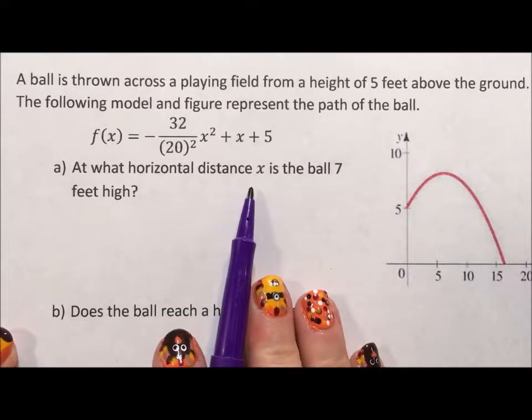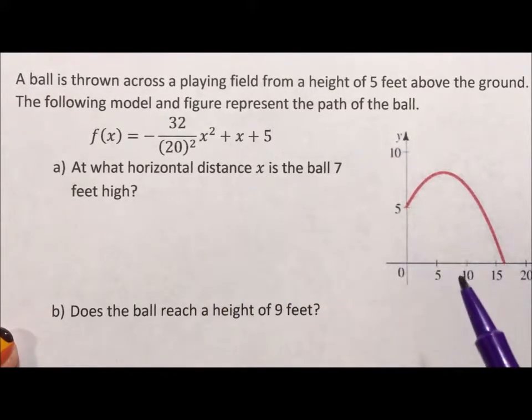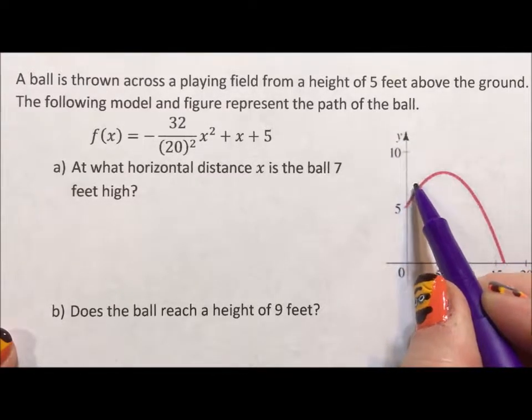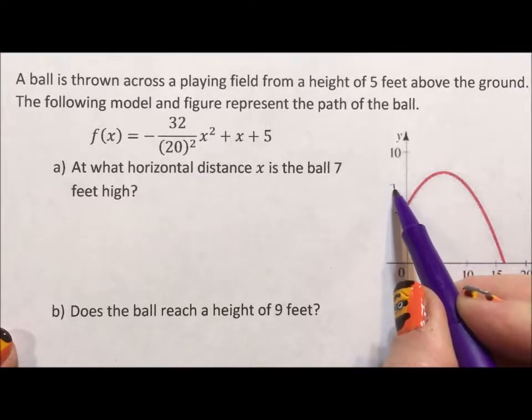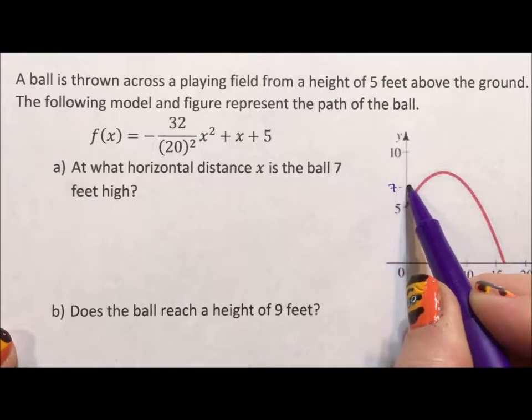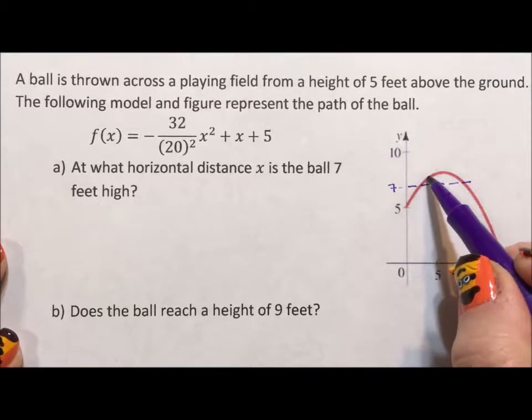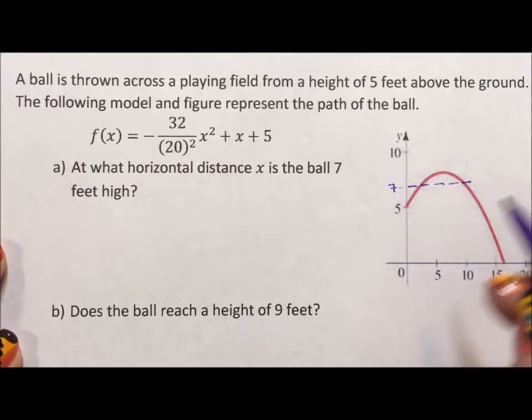It says at what horizontal distance x is the ball 7 feet high? If we look in our graph, 7 feet is about here, and if we think of 7 being about here, we can see that we're really looking for two solutions. It'll hit 7 on the way up and 7 on the way down.